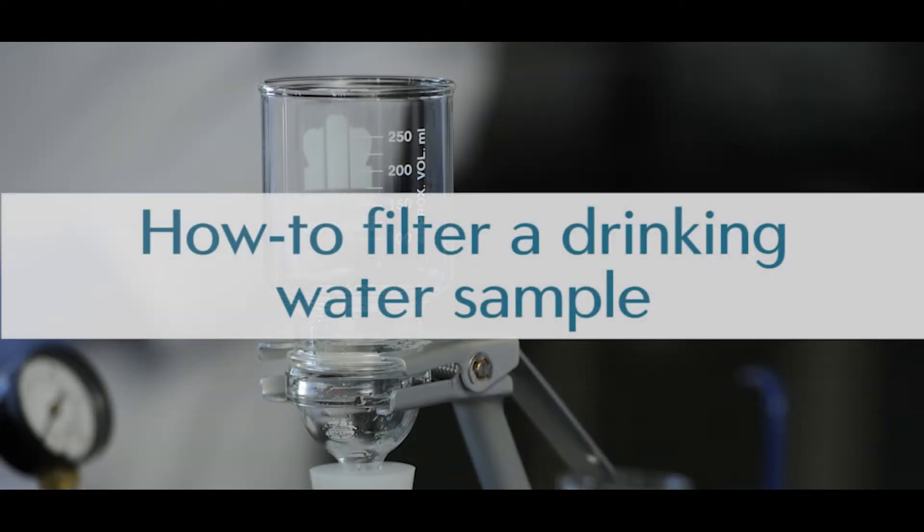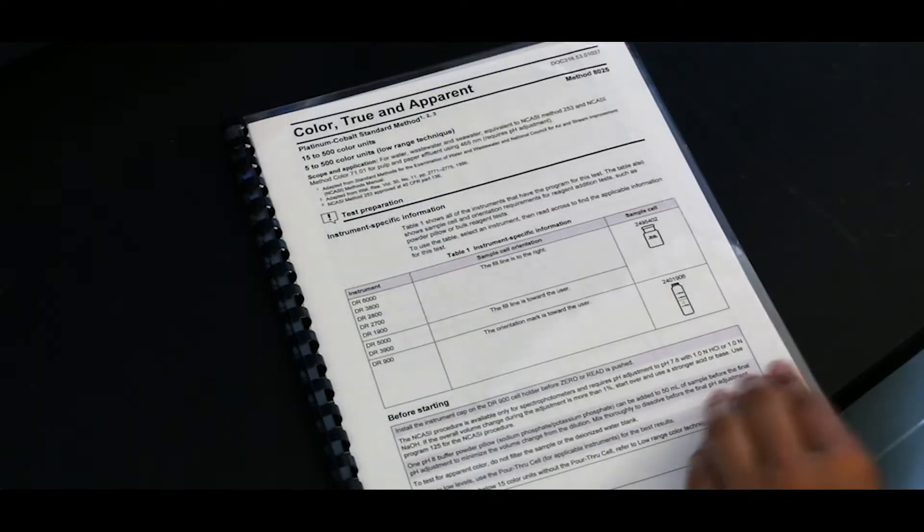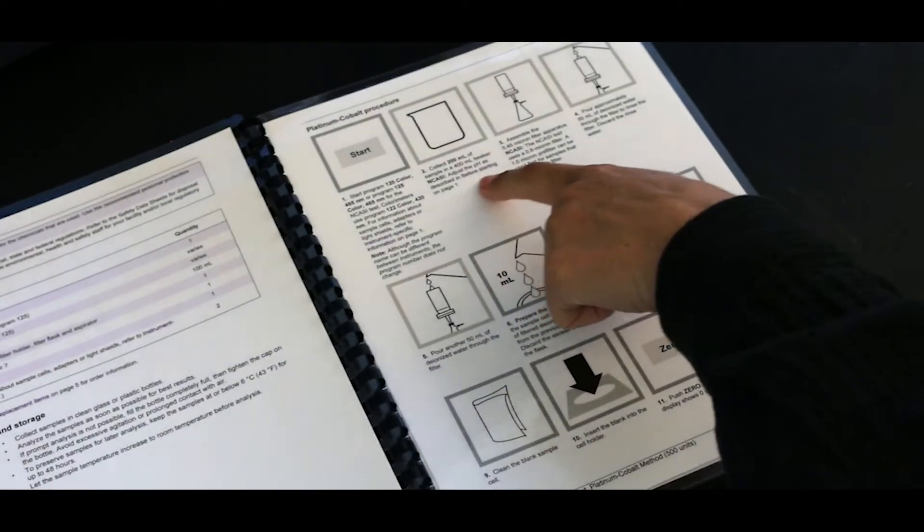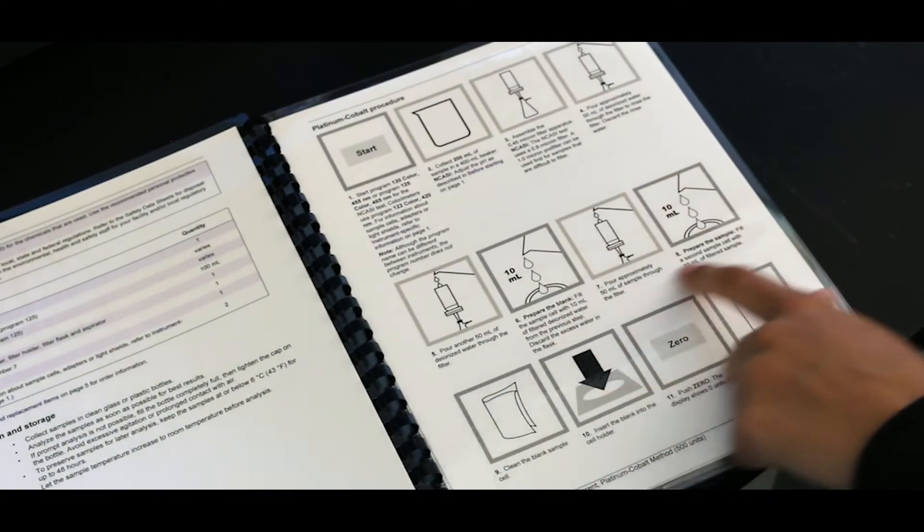Some water quality parameters such as true color, dissolved organic carbon, or UV absorbance and transmittance require filtration prior to analysis to separate the dissolved materials from the suspended matter.